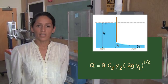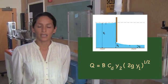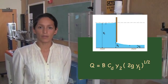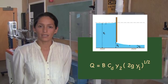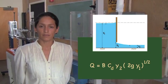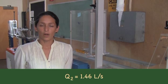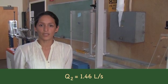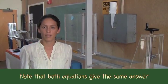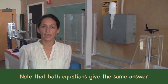Now we apply the practical formula in terms of the gate opening Y2 and upstream depth Y1. The discharge is 1.46 liters per second. Note that both equations give the same answer.